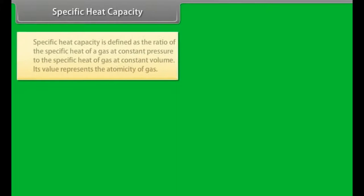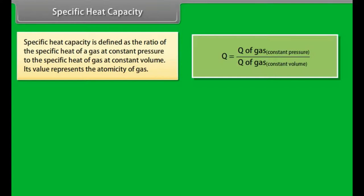Specific heat capacity is defined as the ratio of the specific heat of a gas at constant pressure to the specific heat of a gas at constant volume. Its value represents the atomicity of gas.